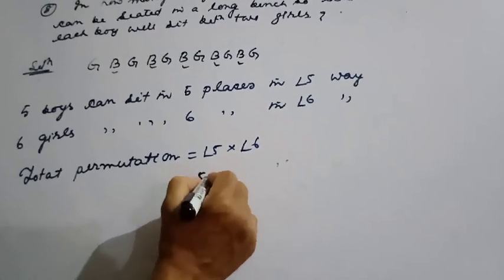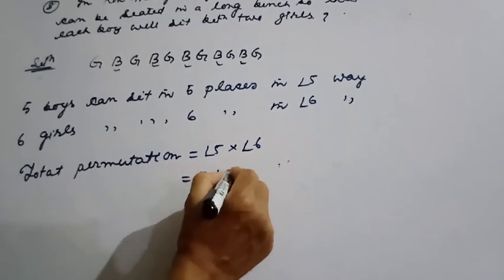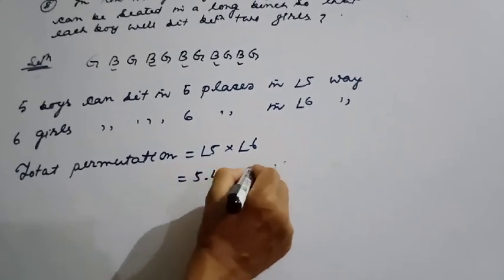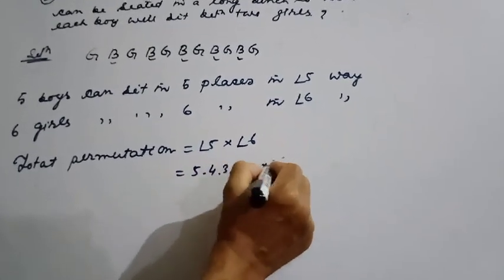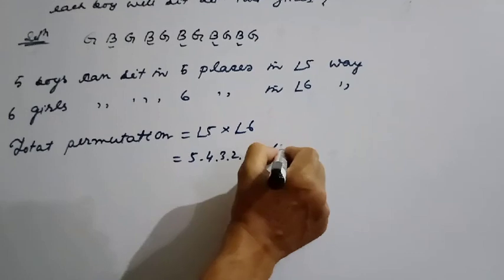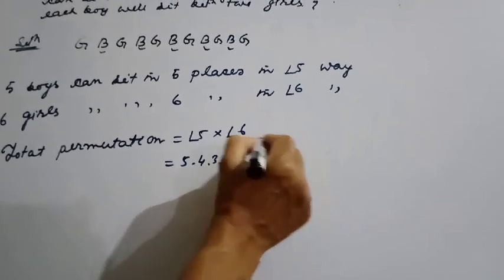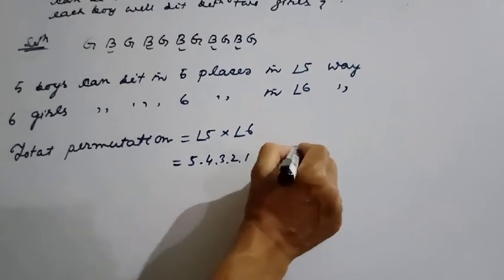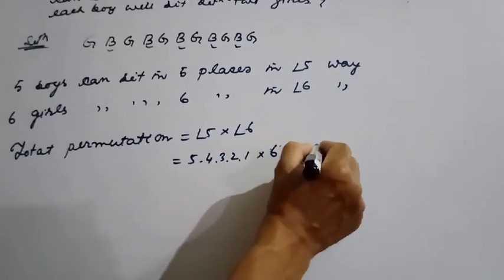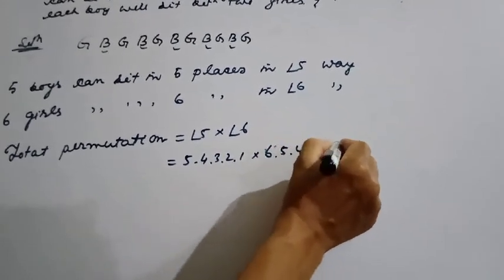Six girls can sit in 6 places in factorial 6 ways: 6 × 5 × 4 × 3 × 2 × 1.